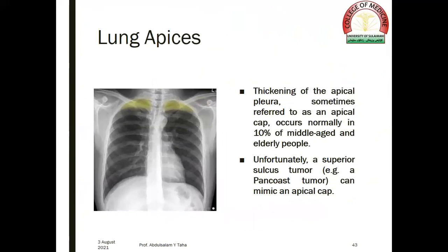The lung apices: thickening of the apical pleura, sometimes referred to as an apical cap, occurs normally in 10% of middle-aged and elderly people. Unfortunately, a superior sulcus tumor — for example, a Pancoast tumor — can mimic an apical cap.